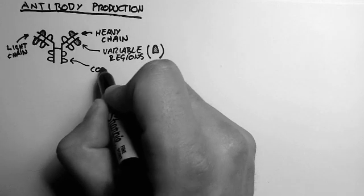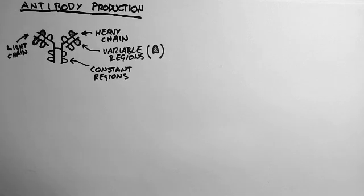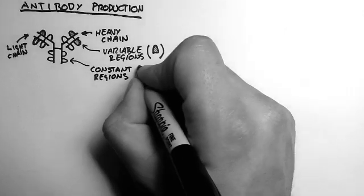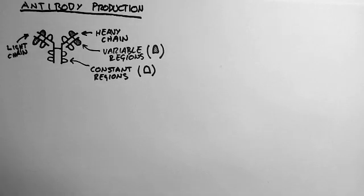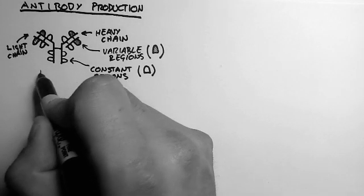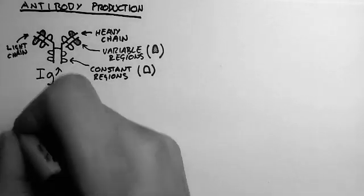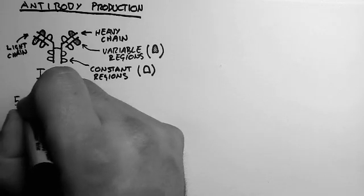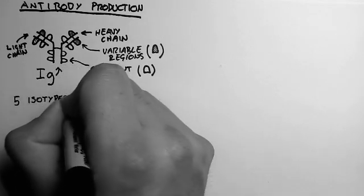The rest of them are called the constant regions, and they're not shaded in. These are what define the style of antibody. So remembering we also call an antibody an immunoglobulin, or just Ig for short. Now there are five isotypes, or just different styles, of antibody.